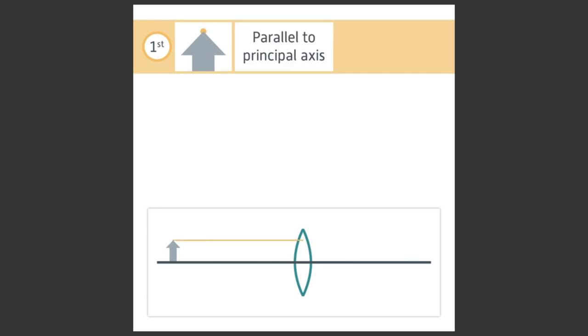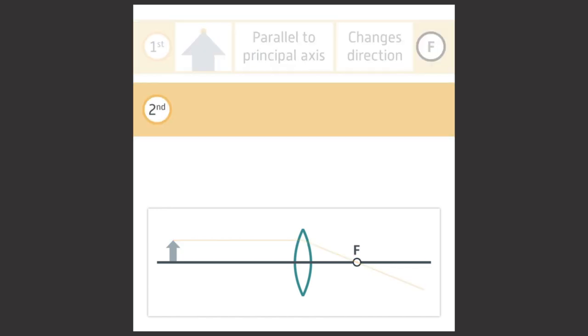The first ray then changes direction and travels to point F on the right of the lens. The second ray goes straight from the tip of the object through the center of the lens and out the other side without changing direction.